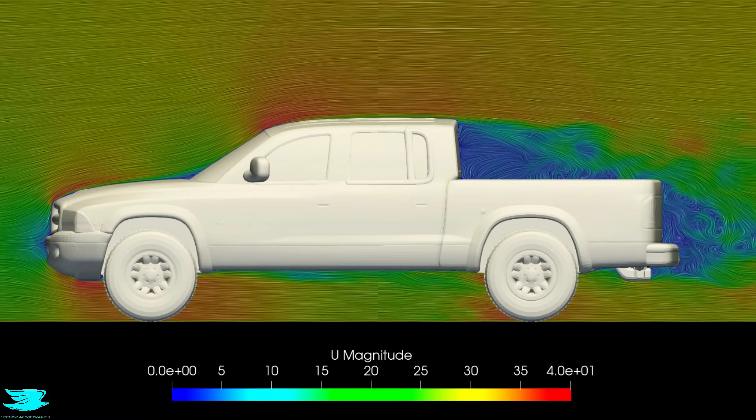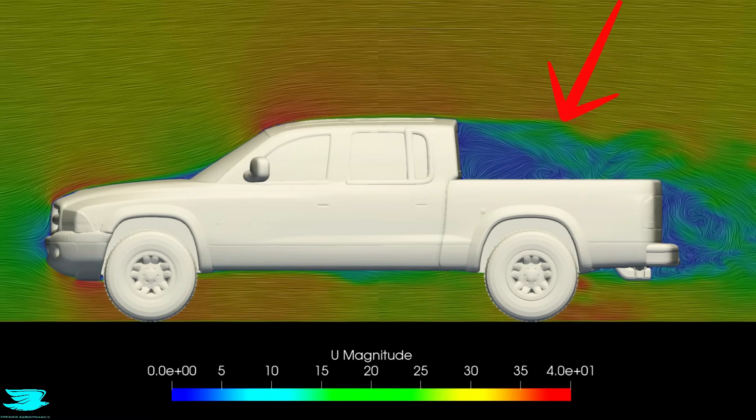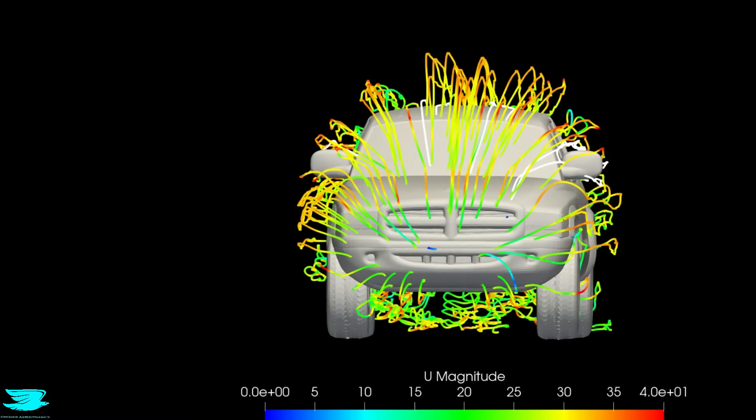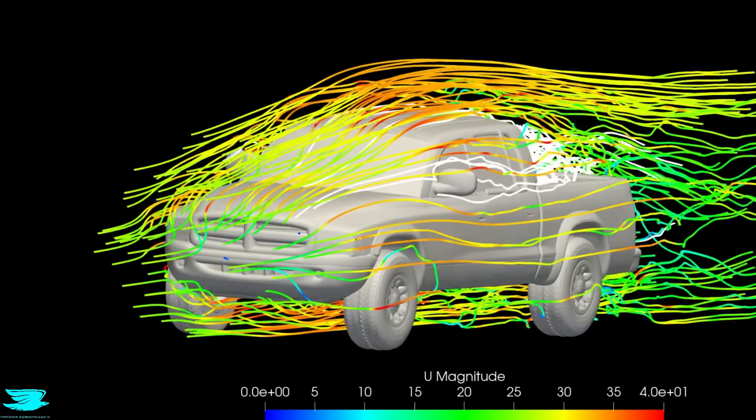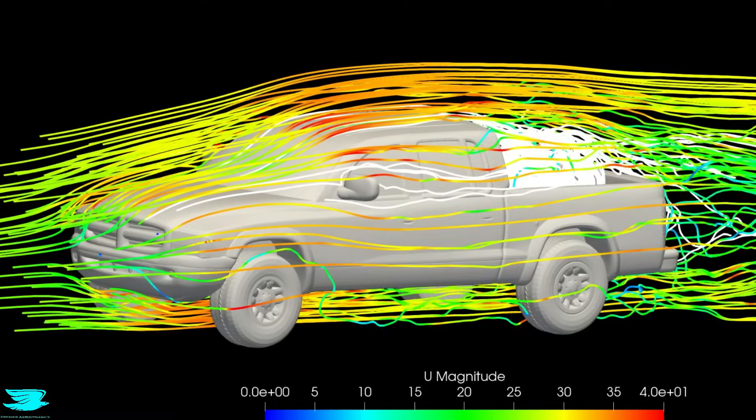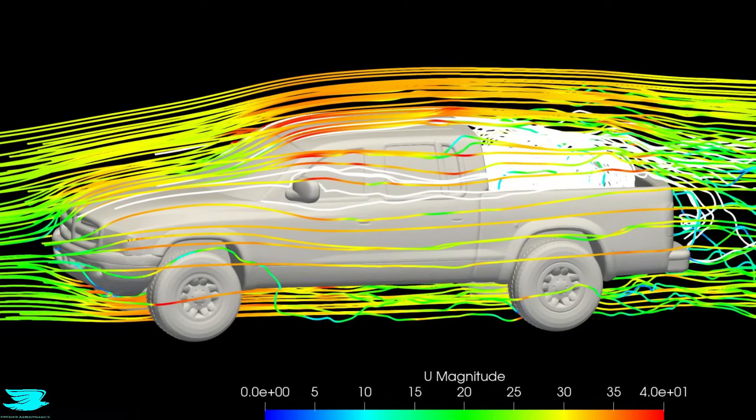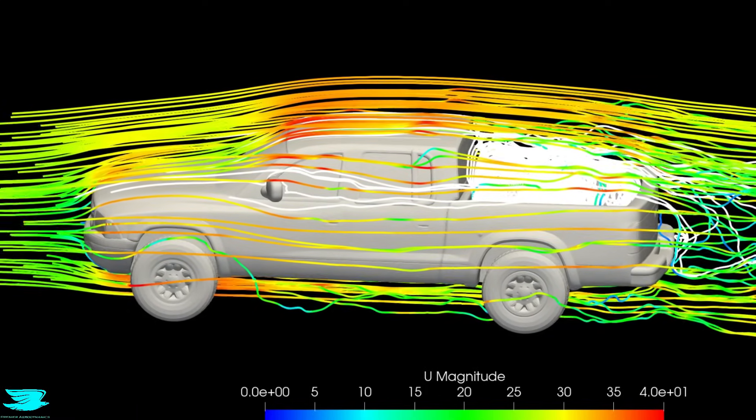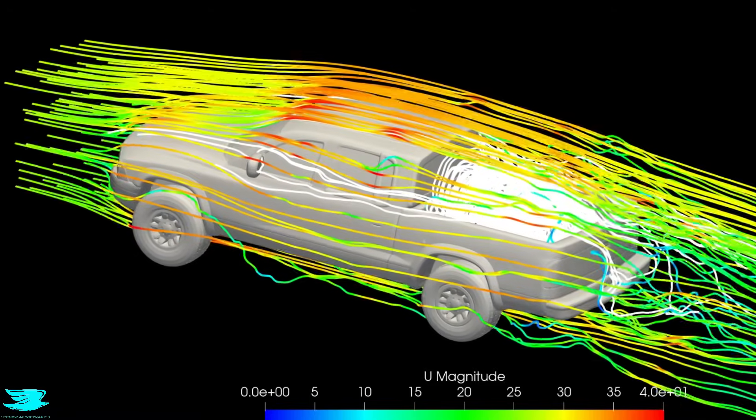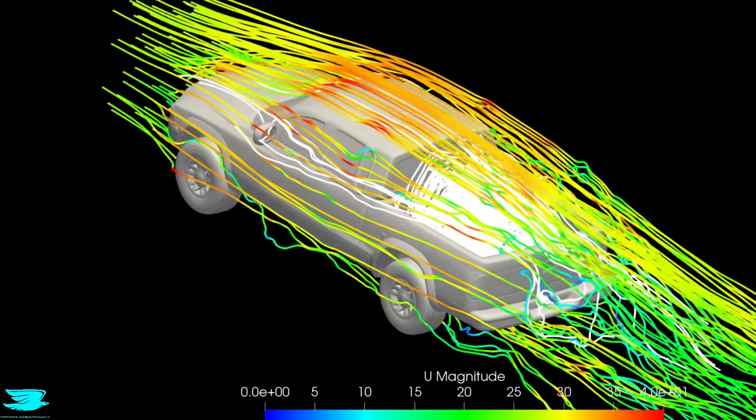The first thing we were really interested in was how the flow in the bed interacts with the rest of the flow. There are two sets of streamlines in this video. The colored ones are for the flow from up in front of the truck and show how the air travels over the truck. The white streamlines are the air inside the bed and extend both upwards and downwards.